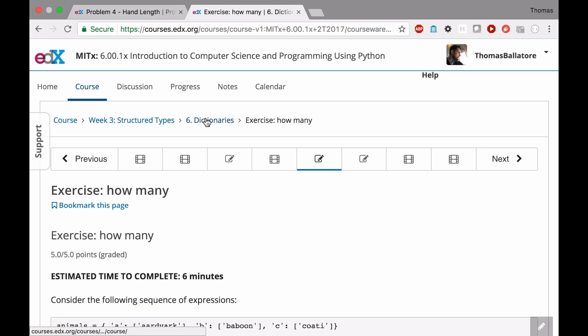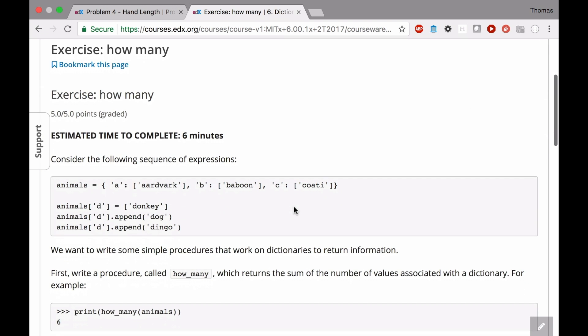You've done almost the identical problem before if you look at week number three, the section on dictionaries, and inside there an exercise called how many. When you coded how many, this was the aardvarks, the baboons, the coatis, whatever those are,